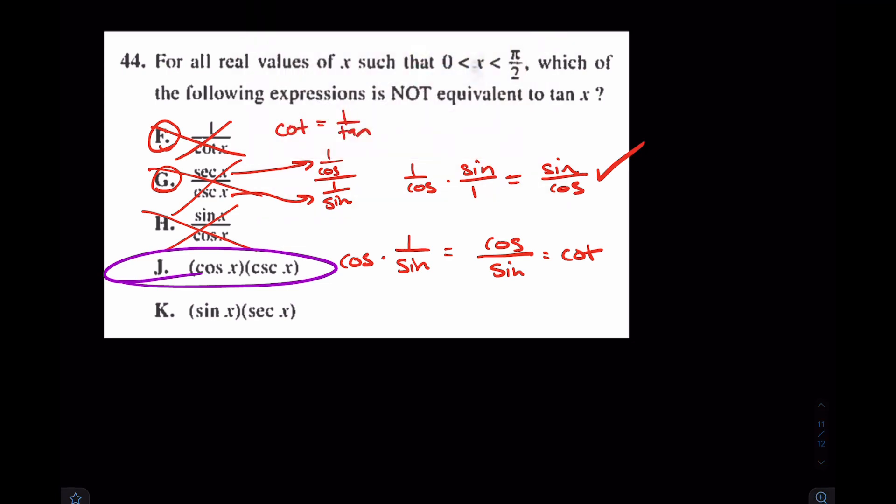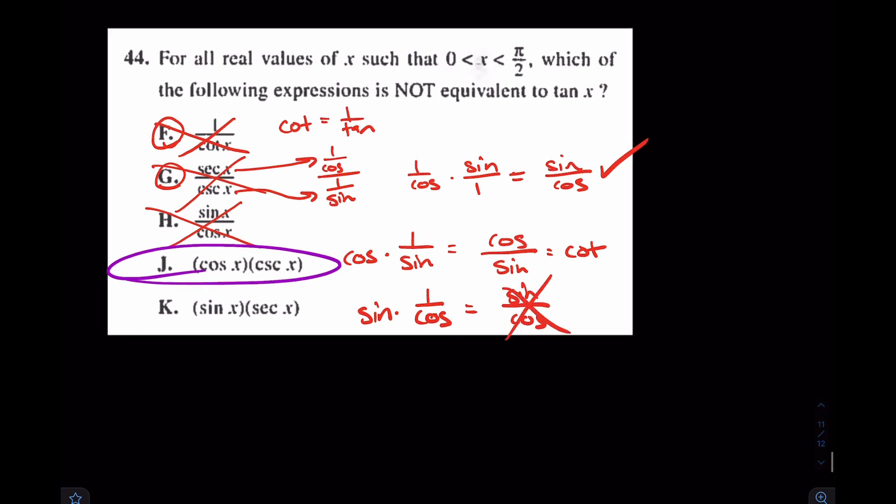But let's take a look at k just to make sure. k says sine times 1 over cosine, which is sine over cosine. And again, that is tangent. So it's definitely not k. It's definitely j.